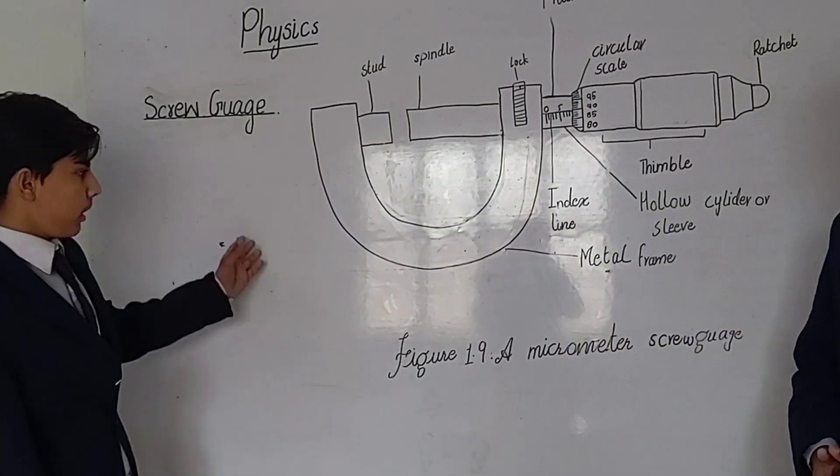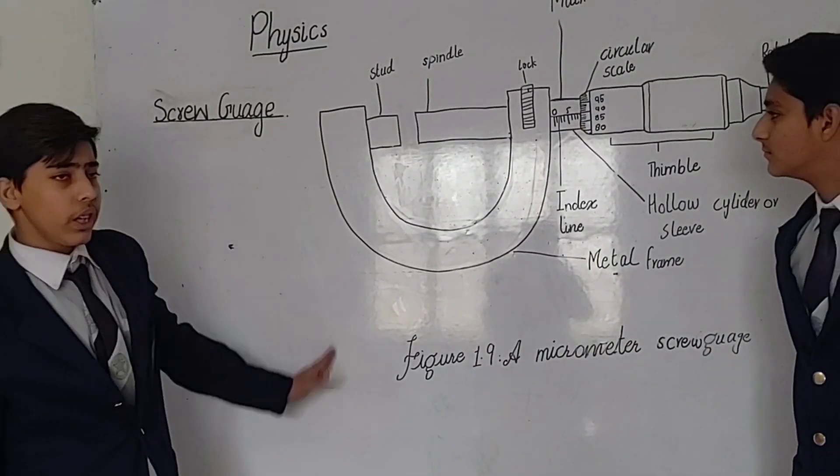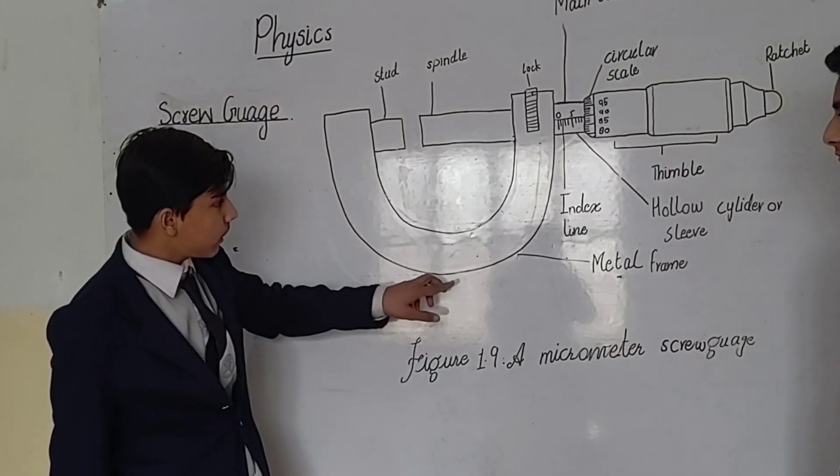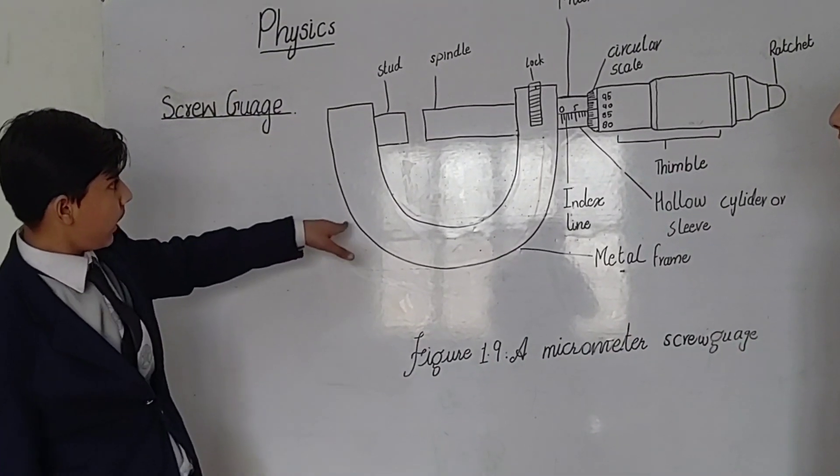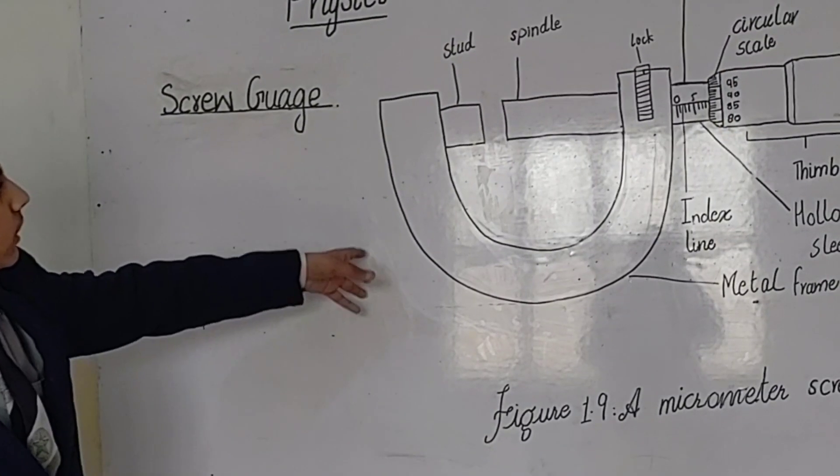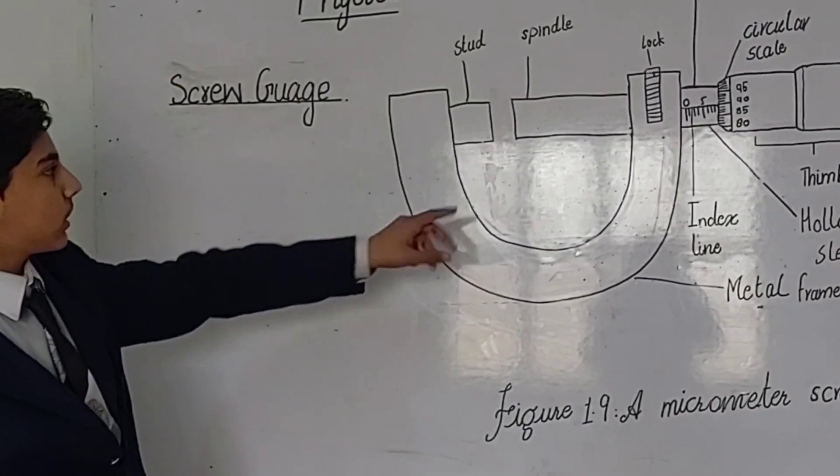Let's talk about the main features of the screw gauge. The screw gauge consists of a U-shaped metal frame and a metal stud at one end.